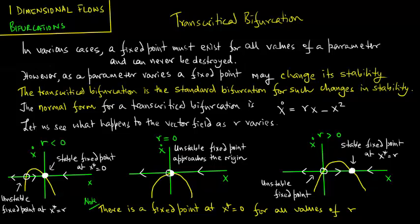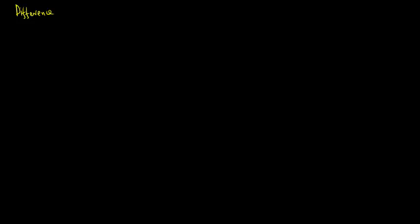Looking at the three diagrams together: when r < 0, there are two fixed points, one stable and one unstable, and the origin is the stable fixed point. When r = 0, the unstable fixed point approaches the origin and we get a half-stable fixed point there. When r > 0, we again have two fixed points, except that the origin is now unstable. So the origin is first fully stable, then half-stable, then unstable as r varies.